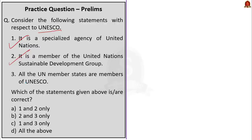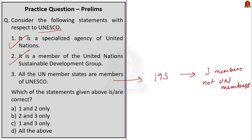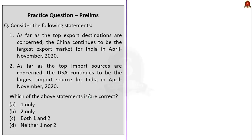The next question is about India's import and export. Statement one: China continues to be the largest export market for India in April-November 2020. Statement two: USA continues to be the largest import source for India in April-November 2020. Both statements are wrong — it is the opposite: China is the top import source, whereas USA is the top export market. The question asks for correct statements, so the correct answer is option D, neither one nor two.